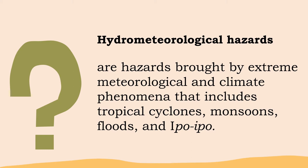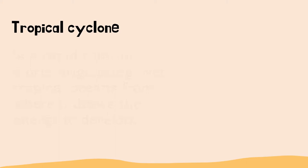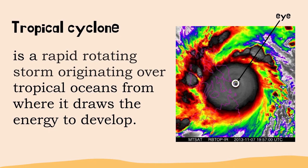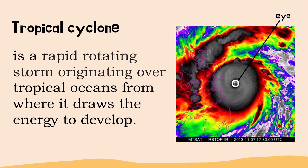Let us now discuss tropical cyclone. A tropical cyclone is a rapid, rotating storm originating over tropical oceans from where it draws the energy to develop. It has a low-pressure center and clouds spiraling towards the eyewall surrounding the eye, the central part of the system where the weather is normally calm and free of clouds.